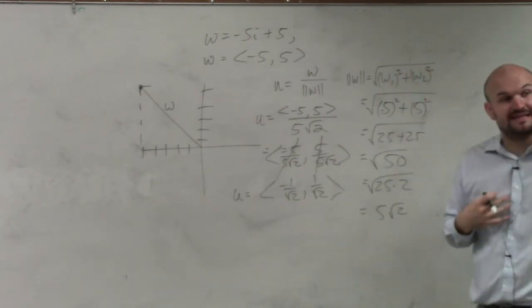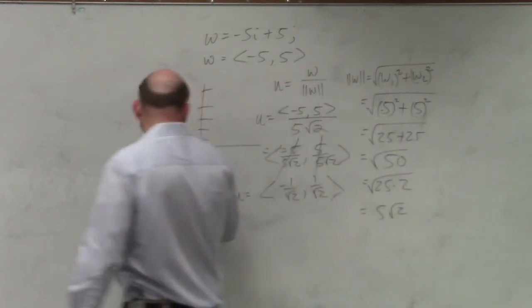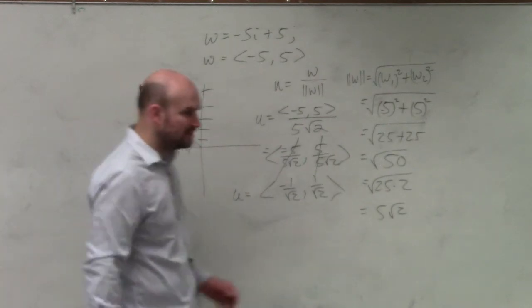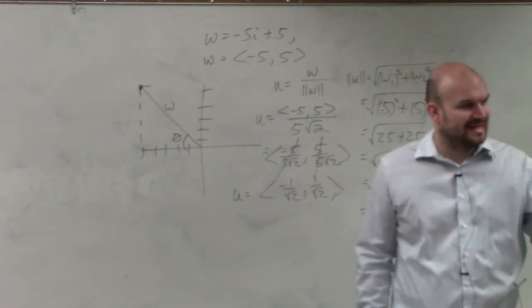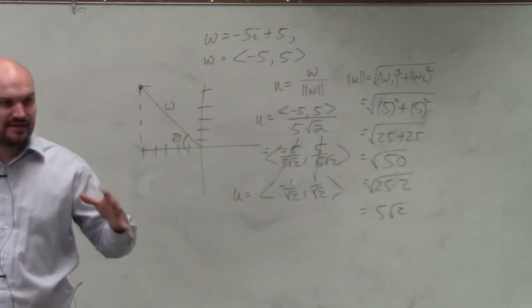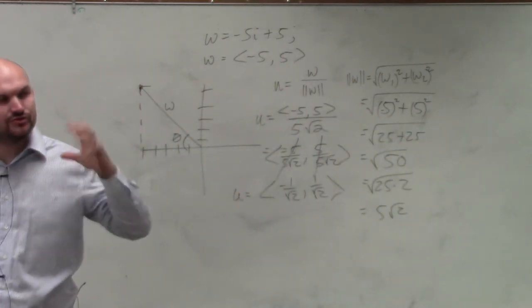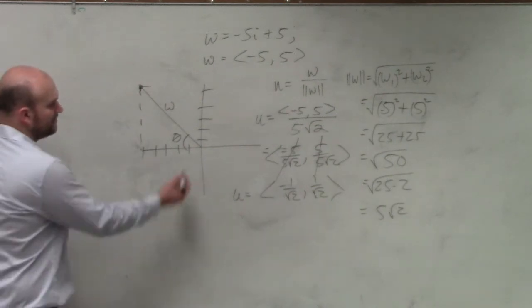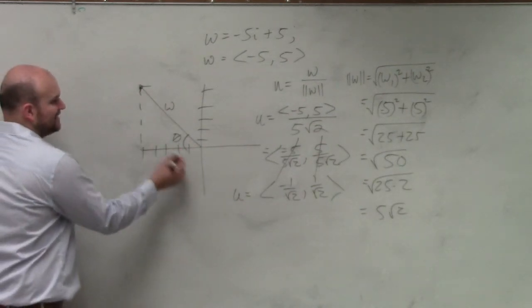But then they want us to find the angle. Now, this is really, really, really important. Whenever you're asked to find the angle, please draw the vector. Until you get really used to this, draw the vector. Because guys, do we have enough information to find this angle here? Yeah, this is right triangle trigonometry, right?